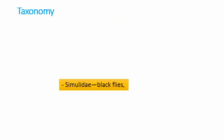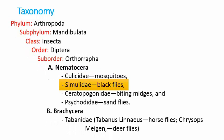Let's start with taxonomy. Phylum Arthropoda, subphylum Mandibulata, class Insecta, order Diptera, suborder Nematocera. With two divisions: Nematocera, which contains family Culicidae, Simuliidae, Ceratopogonidae, and Psychodidae; and Brachycera, which contains family Tabanidae.